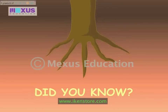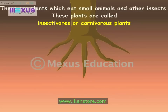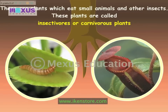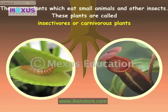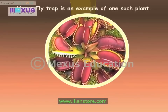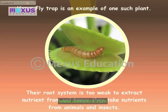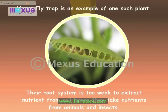Did you know? There are plants which eat small animals and other insects. These plants are called insectivores or carnivorous plants. Venus flytrap is an example of one such plant. Their root system is too weak to extract nutrients from the soil. Hence, they take nutrients from animals and insects.